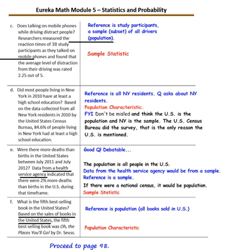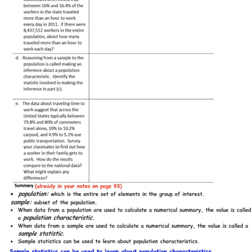In this lesson, you have learned: a population is the entire set of elements in the group of interest; a sample is a subset of the population. When data from a population are used to calculate a numerical summary, the value is called a population characteristic. When data from a sample are used, the value is called a sample statistic. Sample statistics can be used to learn about population characteristics — put that last statement in your notes.